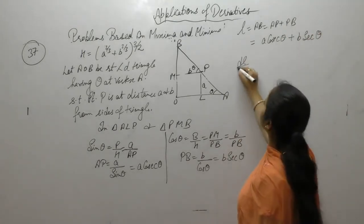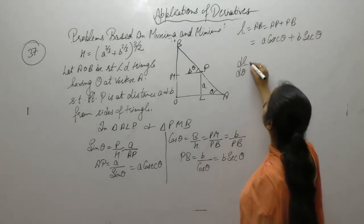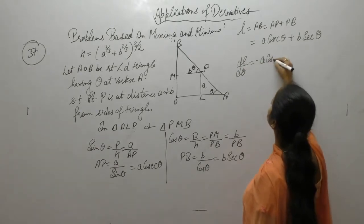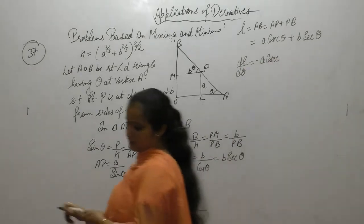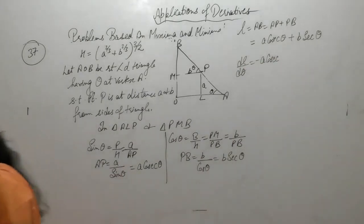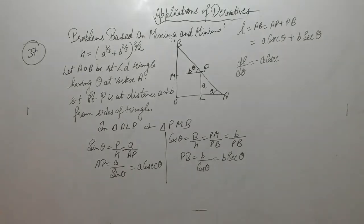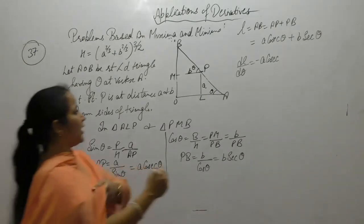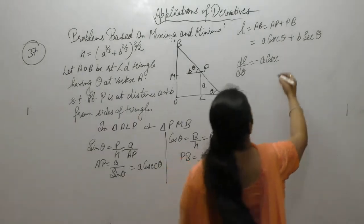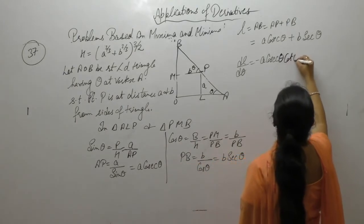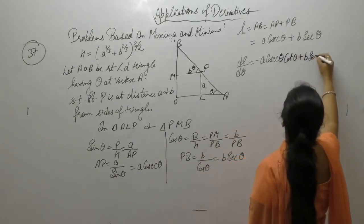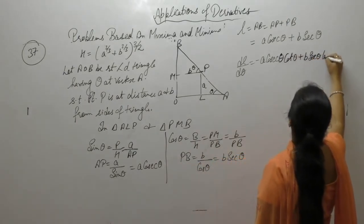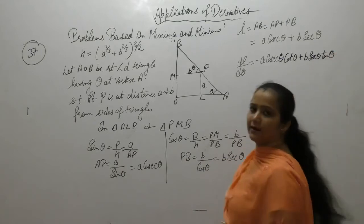Now differentiate with respect to theta. Derivative of cosec theta is minus cosec theta cot theta. Derivative of sec theta is sec theta tan theta.